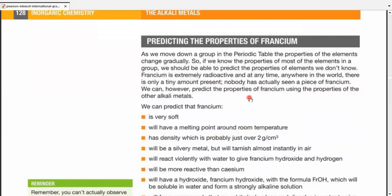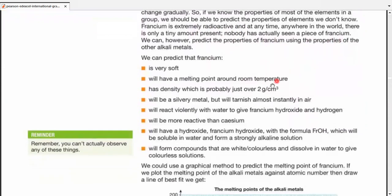Predicting the properties of francium. When in comparison with the rest of the group, francium is extremely radioactive, and nobody has actually seen a piece of francium. So what we can predict: it's very soft. It will have a melting point around room temperature. It would have a density probably just over 2 grams per cubic centimeter, which is high in the case of all of these metals compared, but still is a very low density if compared with the rest of the periodic table. It's a silvery metal. It would tarnish almost instantly in air. It would react violently with water to give francium hydroxide and hydrogen. The reaction would be extremely explosive because it's more reactive than cesium.